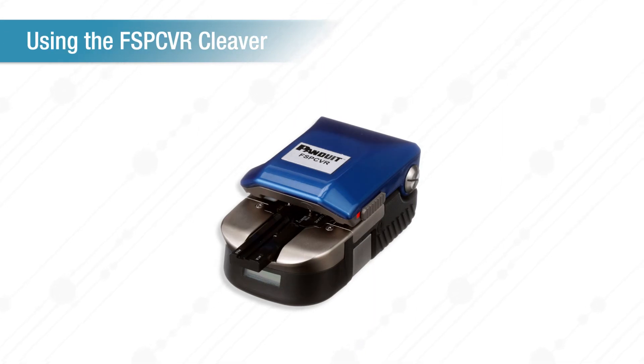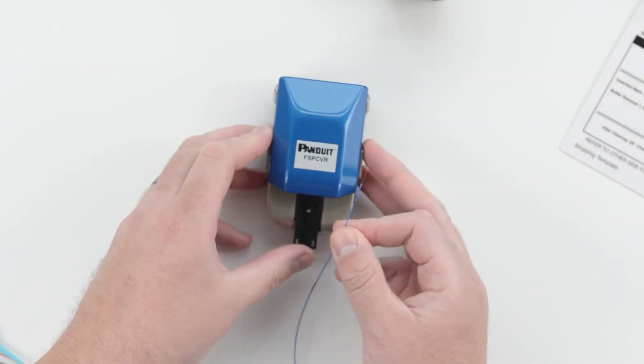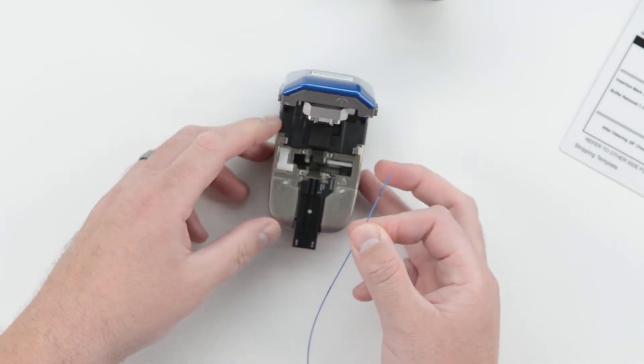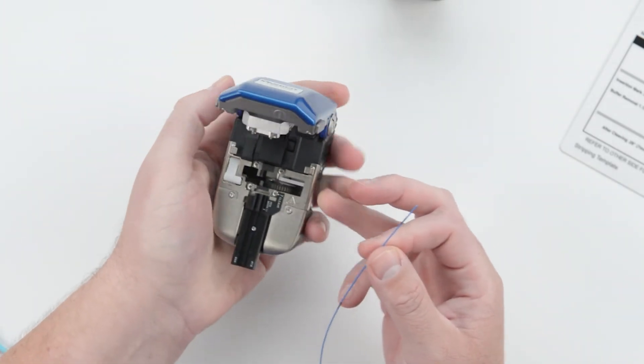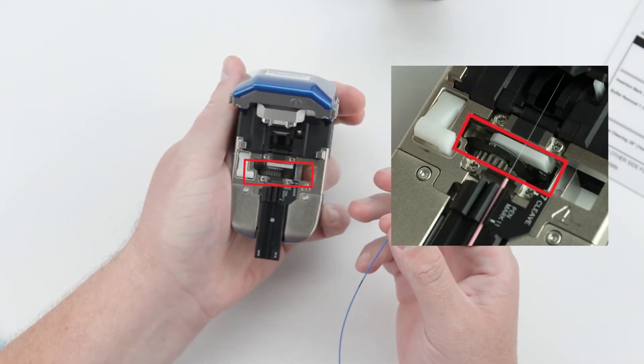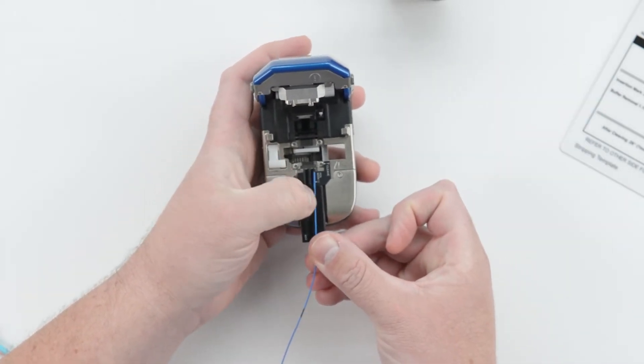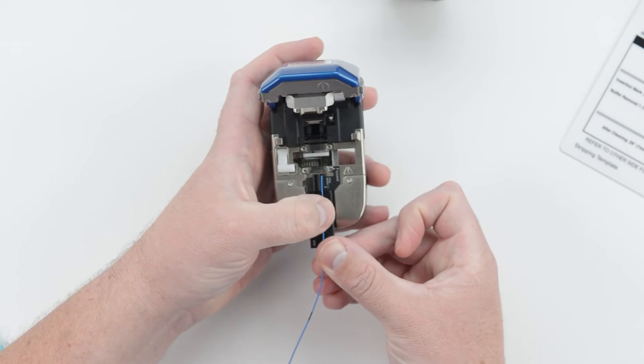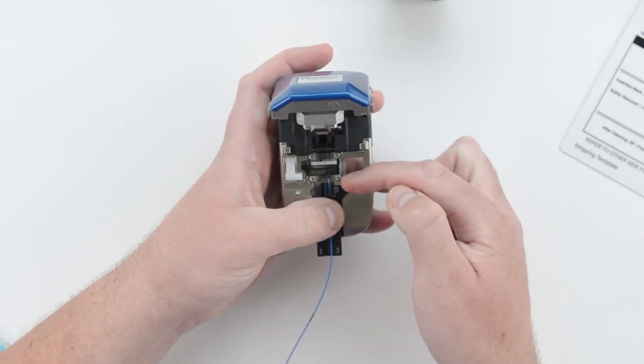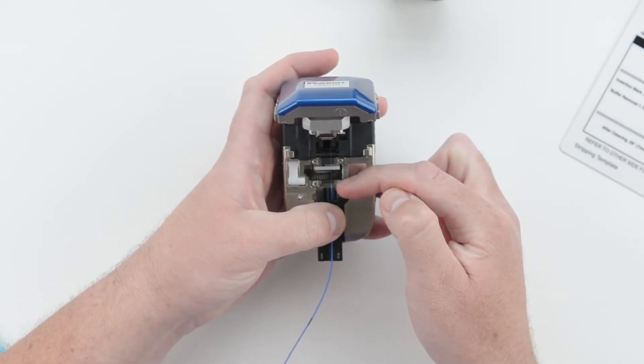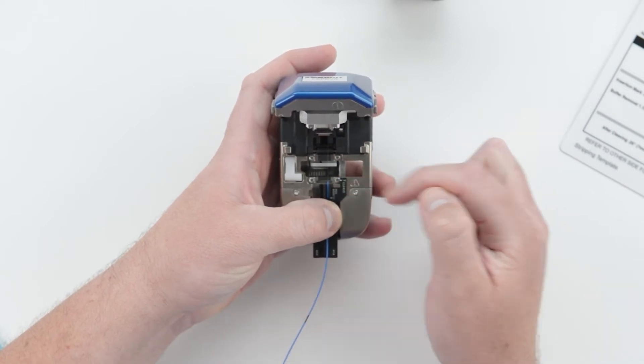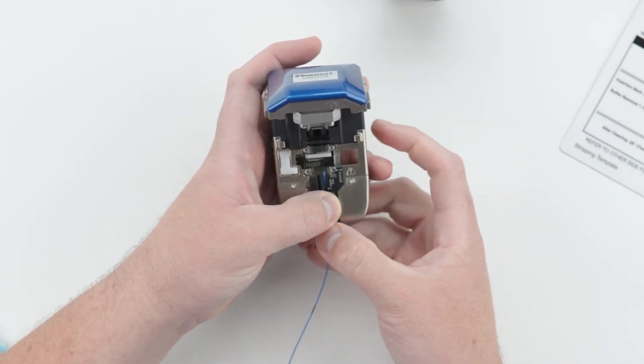If using the FSP-CVR cleaver, open the lid and then press the silver metal square found on the right side of the cleaver until the blade locks in place on the far left side of the cleave area. Advance the fiber in the rightmost groove until the end of the buffer sits at the front edge of the black pad, which is aligned to the 7 millimeter mark on the right. Close the lid to complete the cleave.